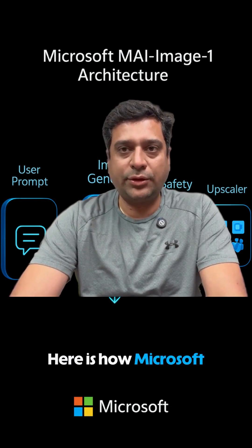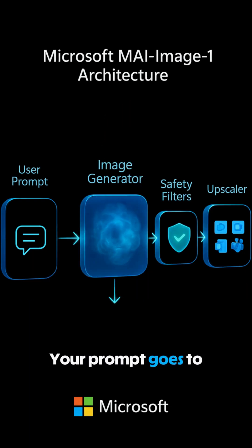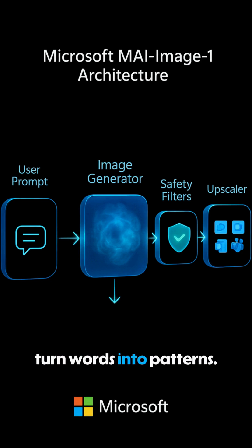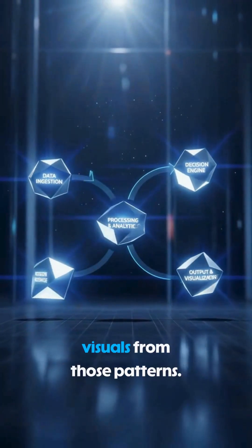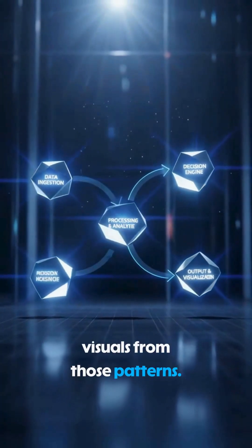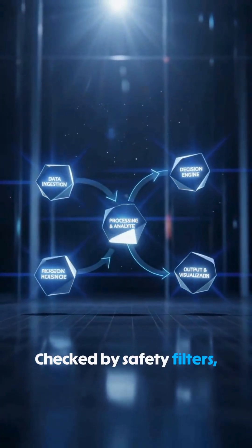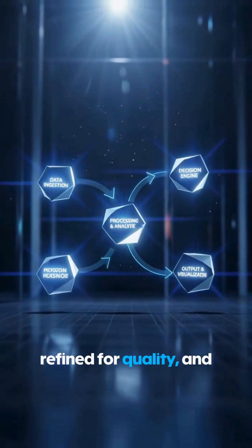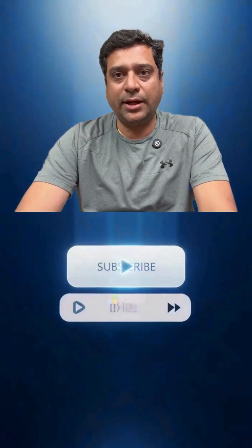Here is how Microsoft MAI Image 1 works. Your prompt goes to the text encoder, which turns words into patterns. The image generator creates visuals from those patterns, checks safety filters, refines for quality, and sends the result straight into the Microsoft Copilot app.